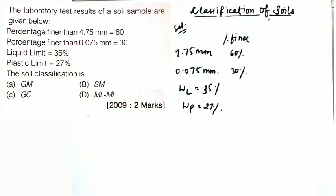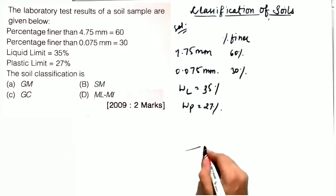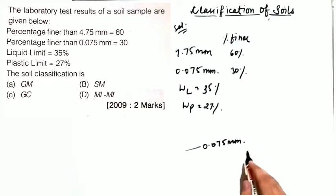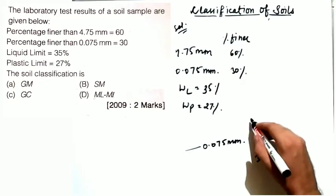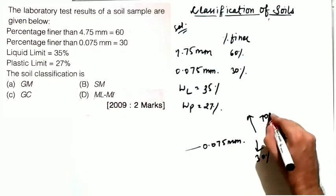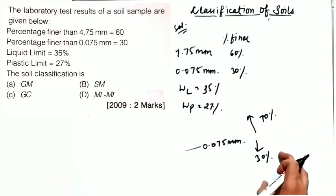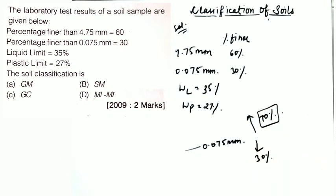First, check whether the soil is fine-grained or coarse-grained. The border is the 0.075 mm sieve. Since 30% is finer than 0.075 mm, 70% is retained on it — meaning 70% is coarse-grained and 30% is fine-grained. Since coarse-grained proportion is dominant, this is classified as a coarse-grained soil.